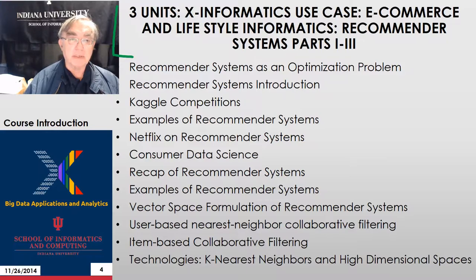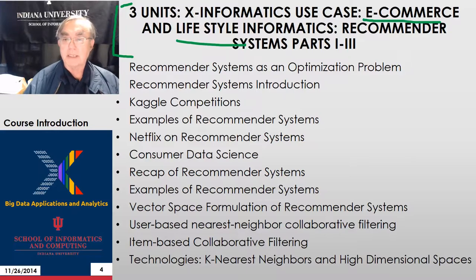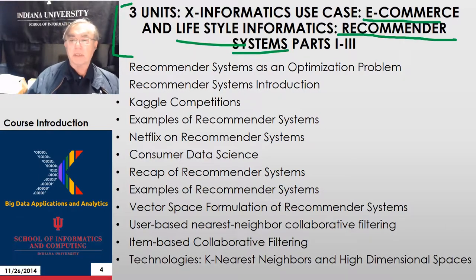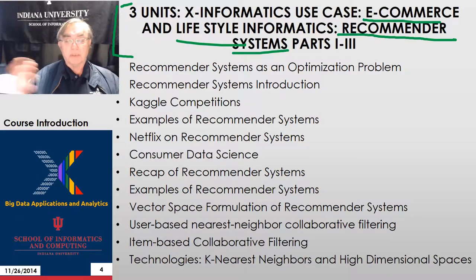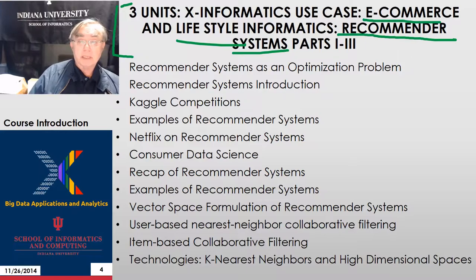The next section has three units and covers the use case of e-commerce, which I sometimes call lifestyle informatics. It discusses in great detail recommender systems — a key technology. When you're watching Netflix it can recommend what you want to look at, or when buying things online it can recommend products using clever techniques that relate you to other people and what they did. This supports things like the so-called long tail, allowing you to find uncommon items because you're near someone else who found something rather uncommon to be very valuable.